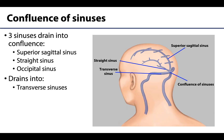The confluence of sinuses is just what it sounds like — an area where many sinuses come together to drain blood into one region. It is typically located just lateral to the internal occipital protuberance, and you can often clearly see where it existed on dry bone because it creates a notable divot next to the internal occipital protuberance. Three dural venous sinuses drain here: the superior sagittal sinus, the straight sinus (formed by the coalescence of the inferior sagittal sinus and the great cerebral vein), and the occipital sinus, which is associated with the falx cerebelli — the dural partition located between the cerebellar hemispheres.